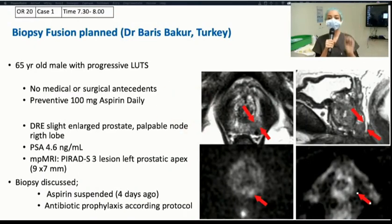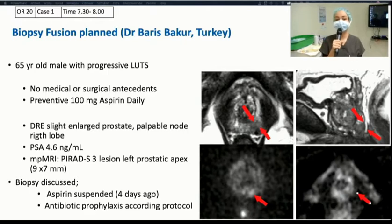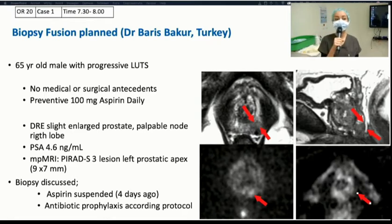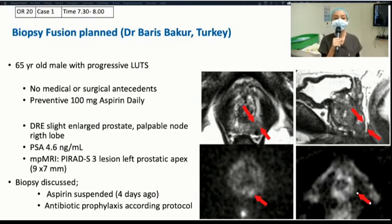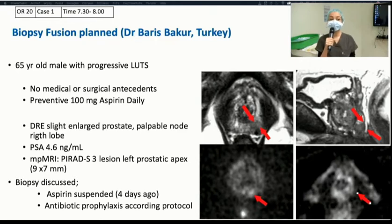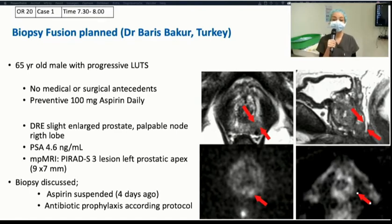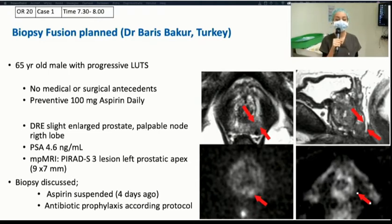Our first case is a 65-year-old male with progressive lower urinary tract symptoms. He has no significant medical or surgical antecedents. He uses 100 mg aspirin daily for primary prevention. Digital rectal examination shows a slightly enlarged prostate gland with a palpable right nodule in the right lobe. PSA is 4.6 ng per milliliter. Multi-parametric MRI shows a PIRADS 3 lesion at the left prostatic apex measuring 9 by 7 mm. His aspirin treatment was suspended 4 days ago and antibiotic prophylaxis maintained according to protocol. Dr. Barış Bakır will now perform the fusion biopsy.